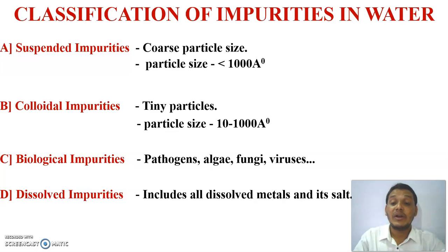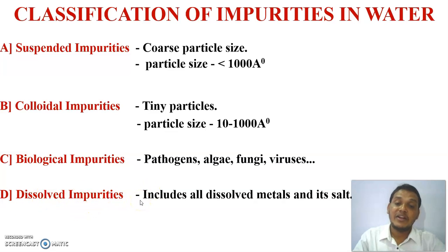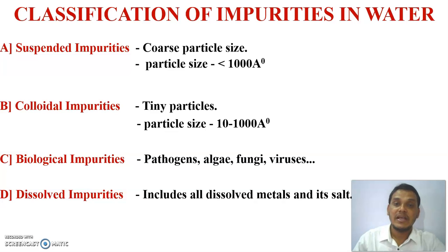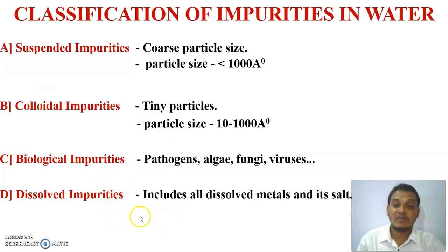The fourth type is dissolved impurities, which are of two kinds: dissolved gases and dissolved salts. Dissolved salts include heavy metal salts of calcium, magnesium, zinc, aluminium, and manganese. Dissolved gases include carbon dioxide, sulfur dioxide, and nitrogen dioxide.